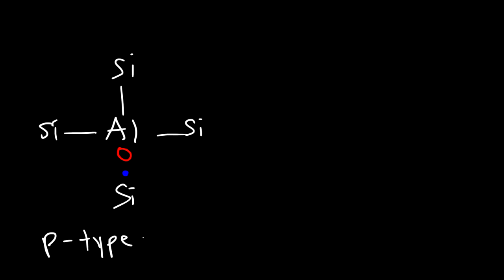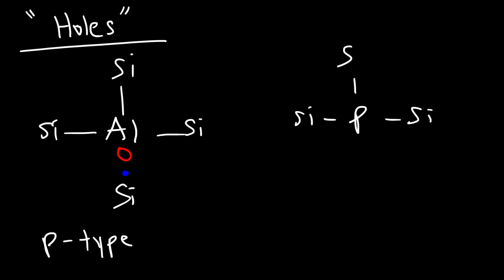A p-type semiconductor conducts electricity better than pure silicon, so the conductivity goes up. But the charge carriers are not electrons as in the n-type semiconductor. For a p-type semiconductor, the charge carriers are holes — electron vacancies. It is the movement of holes that is responsible for the conductivity of a p-type semiconductor. In the case of an n-type semiconductor with phosphorus, the charge carriers are electrons, which are free to move.